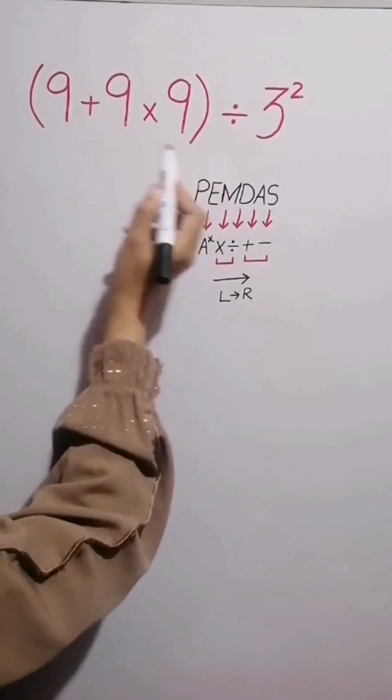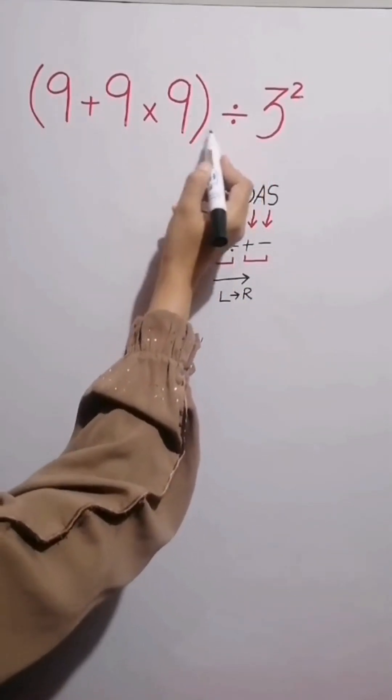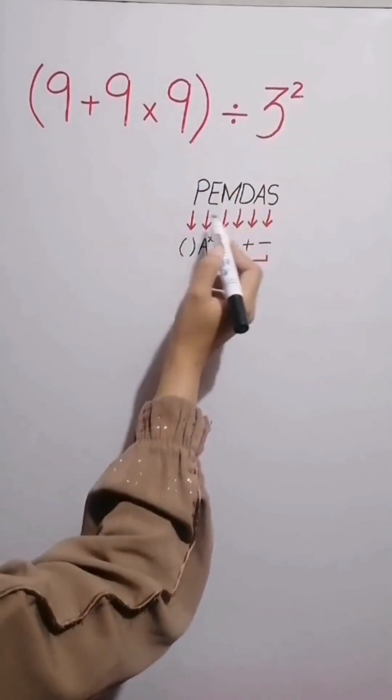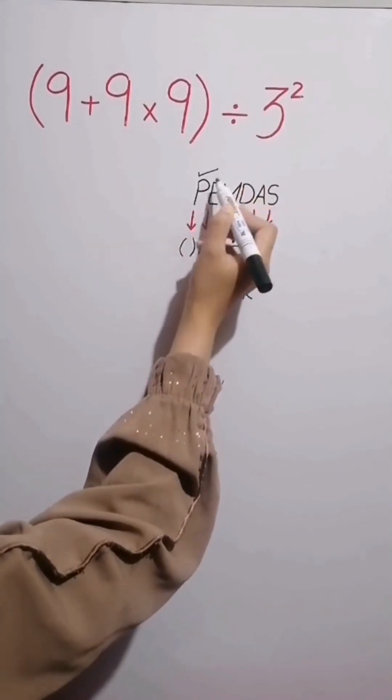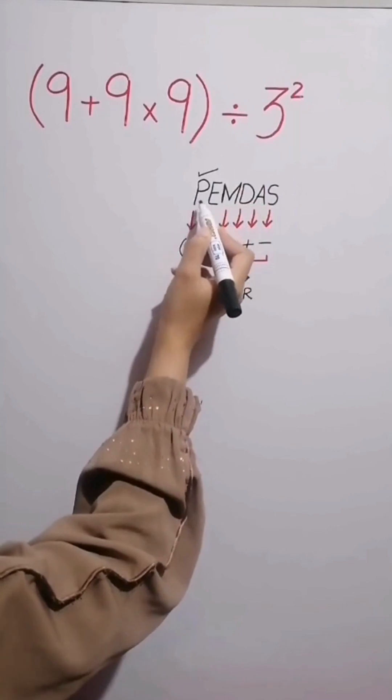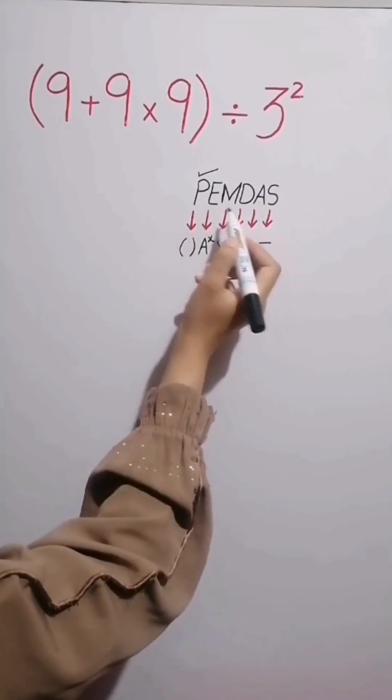In this expression, we have parentheses, division, and then exponent. According to the PEMDAS rule, first we simplify the parentheses because parentheses has higher priority than all other operations.